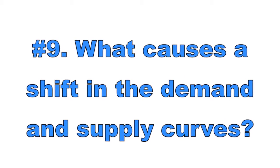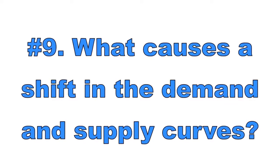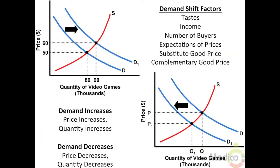Number nine: What causes a shift in the demand and supply curves? A change in any of the following will cause the demand curve to shift to the right, causing the market price and quantity to increase, or shift to the left, causing the market price and quantity to decrease. First, tastes and preferences of consumers — for example, an increase in the popularity of a good will shift demand to the right, causing the market price and equilibrium quantity to increase.